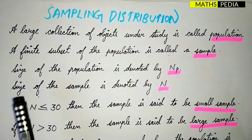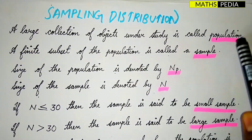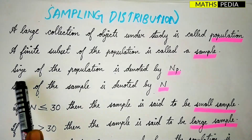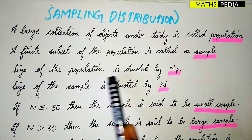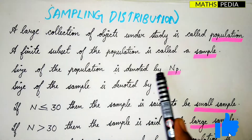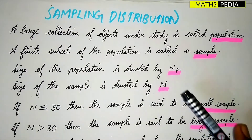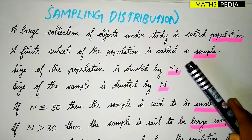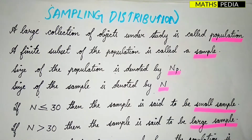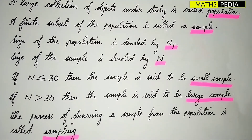Now, how do we denote population as well as sample? The size of the population is denoted by capital N, and the size of the sample is denoted by lowercase n. This is the way to denote population and sample size.